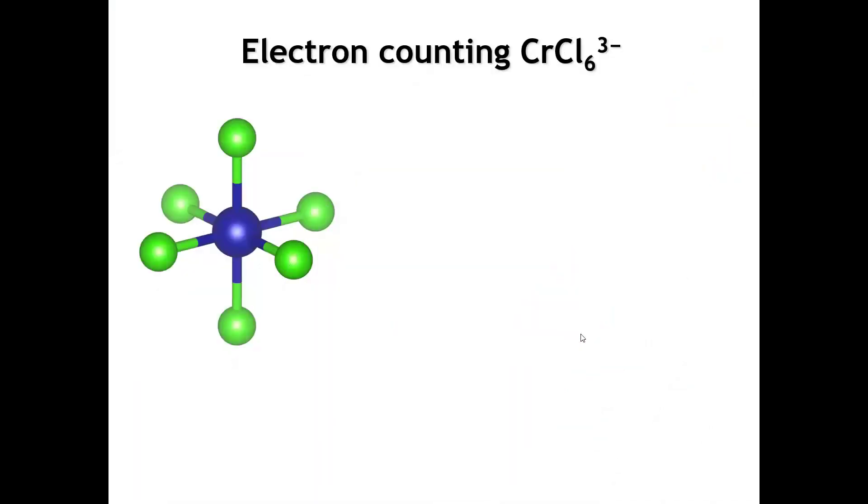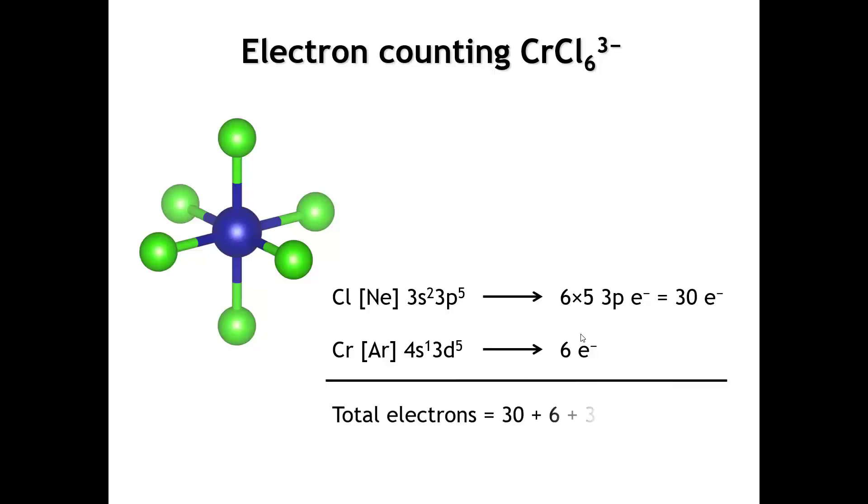Let's do the electron counting here. Chlorine has a 3s2 3p5 electron configuration. We're taking the s orbitals out of the picture, treating those as core electrons. So we're only going to count the p electrons on chlorine here. Six times five is 30 electrons from chlorine. Chromium has six valence electrons, and the charge on this complex ion is 3 minus. So there's going to be a total of 39 valence electrons.